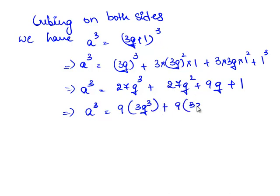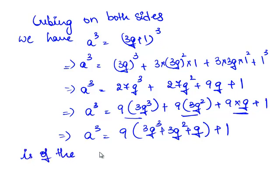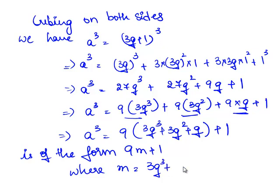Since 9 is a common factor in the first three terms, we bring it out, leaving 9 times (3q³ plus 3q² plus q) plus 1. This is of the form 9m plus 1, where m equals 3q³ plus 3q² plus q.